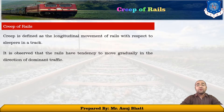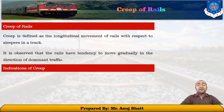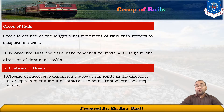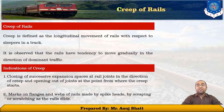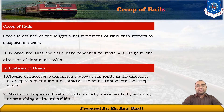Creep is a longitudinal movement of the track with respect to the sleepers. The indications of creep are: closing of successive expansion spaces at rail joints in the direction of the creep, opening of joints at the point where creep starts, and marks on the flanges and webs of rails made by the spike head or by scraping and scratching. These two are the indications of creep.